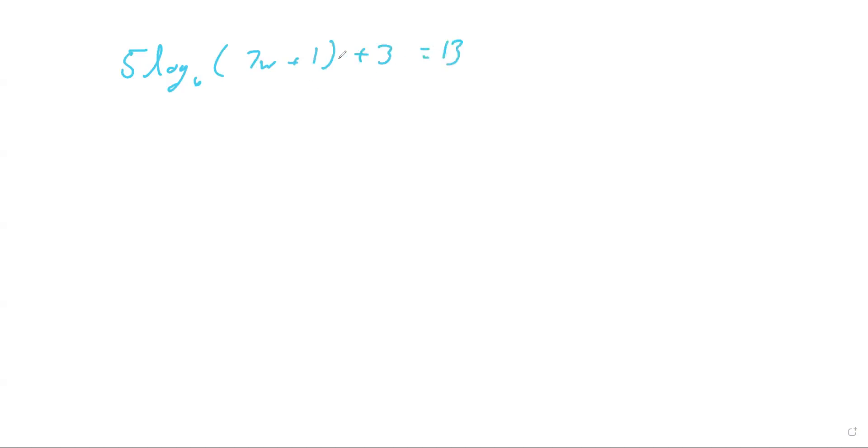In the previous problem we saw, we had log on both sides. We were able to pretty much cancel them and set what was in the logs equal to each other, and just solve. When you're just given one log, you want to isolate the log so that we can actually turn it into an exponential. Just like when we had an exponential, we isolated it to solve for a log.